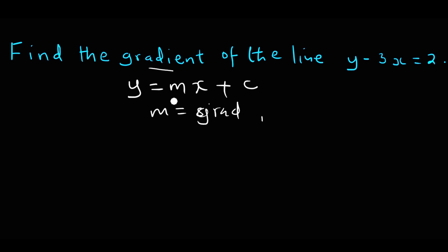And c stands for the y-intercept. So all we need to do is rewrite our equation y minus 3x is equal to 2 in the form y is equal to mx plus c. We have y is equal to — we can take negative 3x to the right so that it becomes positive 3x.